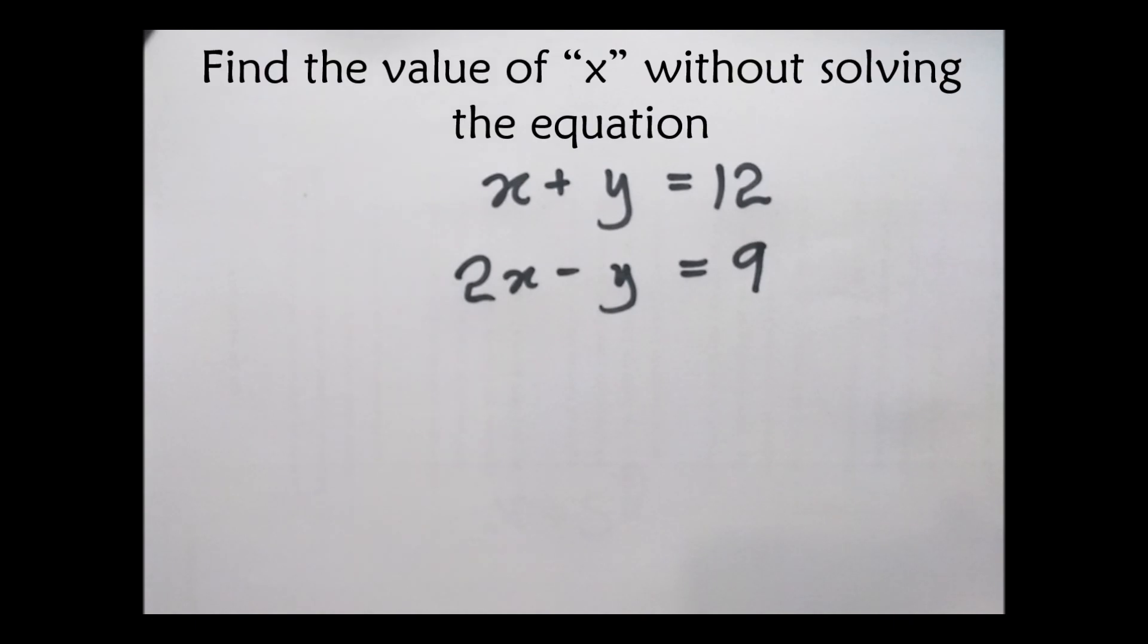In this question they are asking us to find the value of x without solving the equation. How do we solve this? You can see in the first equation x + y = 12 and in the second equation 2x - y = 9. It's related to simultaneous equations. Now we have to cancel one term.